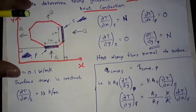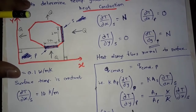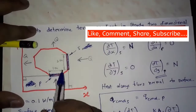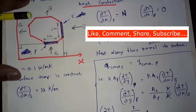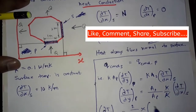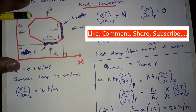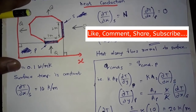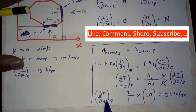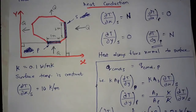Putting in the values: ∂T/∂y for P equals A_S over A_P, which is two over one, multiplied by the value of ∂T/∂x for S, which is 10 kelvin per meter. This gives 20 kelvin per meter. This is the value for ∂T/∂y for surface P, which is 20 kelvin per meter.